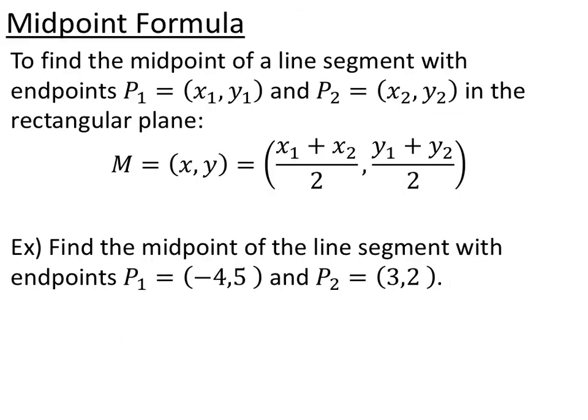The next formula we're going to talk about is the midpoint formula. To find the midpoint between two points, P1 and P2, you just find the average of the x-coordinates, and that's going to be your new x-coordinate, and the average of the y-coordinates, and that's going to be your new y-coordinate. So add them together and divide by 2. Go ahead and pause the video and find the midpoint of the line segment that has endpoints P1 and P2, the same points that we just looked at.